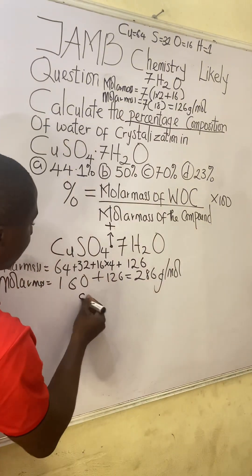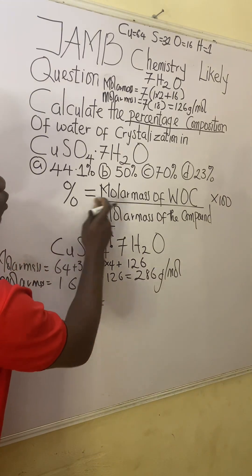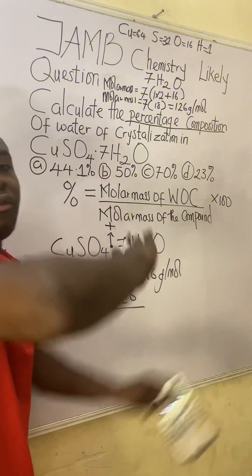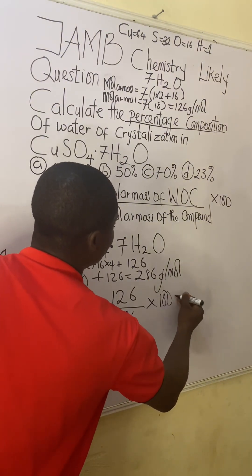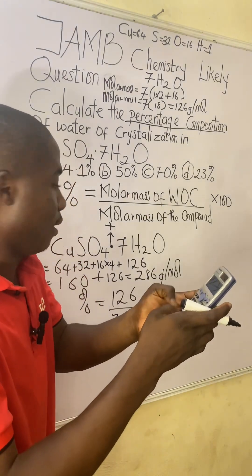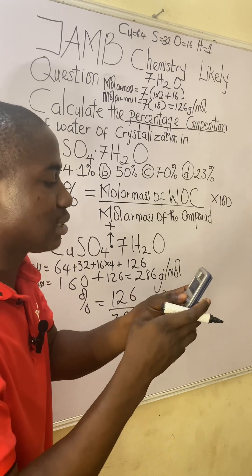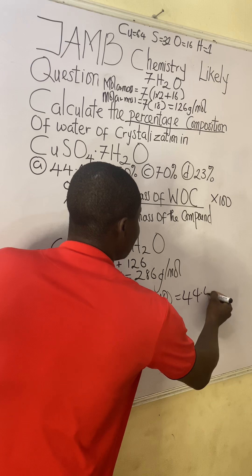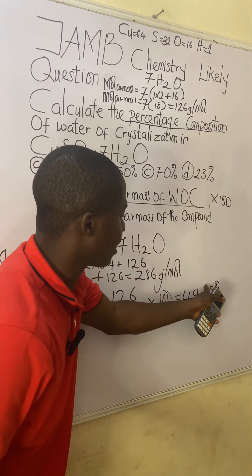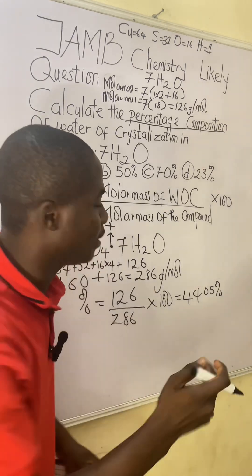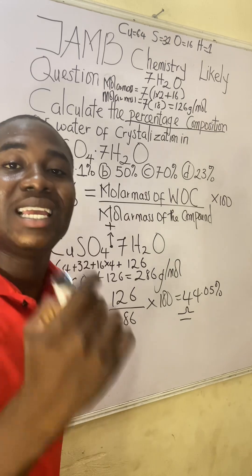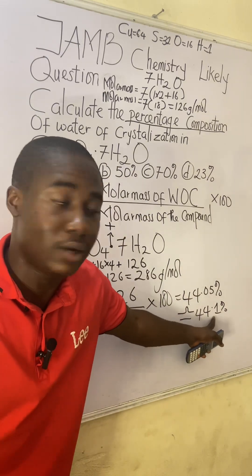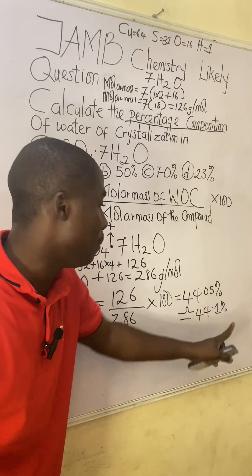Now substitute into the formula: percentage composition = (molar mass of water of crystallization ÷ molar mass of full compound) × 100 = (126 ÷ 286) × 100 = 44.05%. Since the digit after the decimal is 5, we round up: 44.05% ≈ 44.1%.